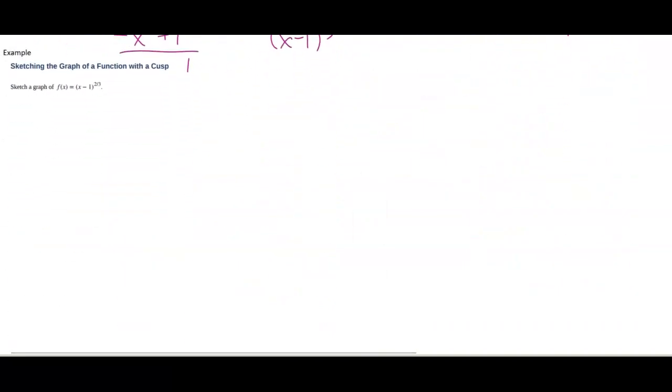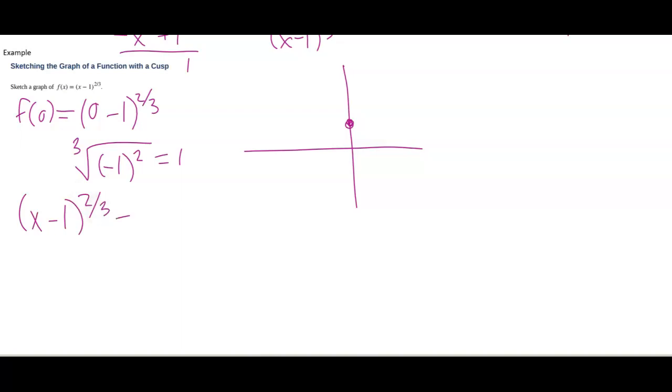All right. One more example in these videos here. Let's look at what happens with a cusp. So when I'm looking at this as a function, I'm kind of like, that's a little bit weird, but let's plug in f of zero and just see what happens. I get zero minus one to the two thirds. Now that's going to be the cube root of negative one squared. So that's going to give me one. So I know the point zero one is on my graph. And then let's also find out when is this going to be equal to zero? Well, I know definitely at x equals one, I'm going to have a zero. Let's also plug in x equals negative one. It doesn't look like that's going to end up working out.